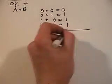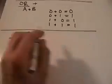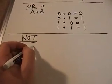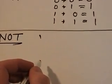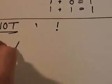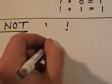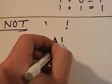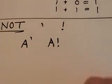Our NOT operator is probably the most simple. NOT uses prime like that to denote it, or you can use the exclamation point like that. So you can have A prime, and this will be A NOT. Or you can have A exclamation, which is A NOT as well. These can both be used.